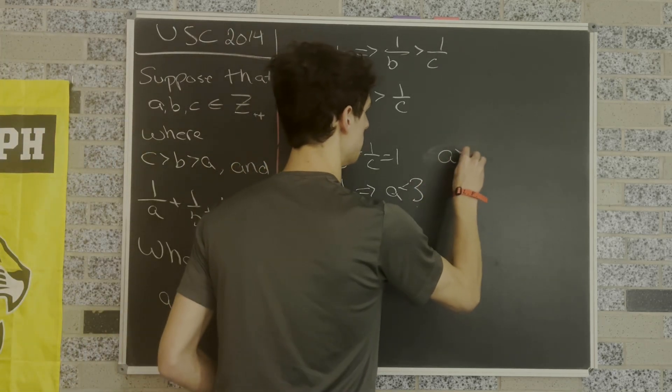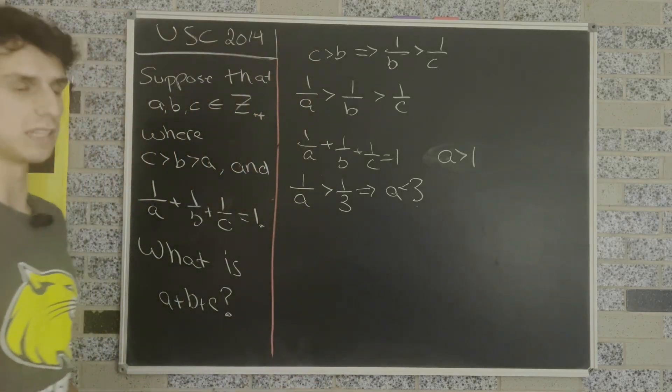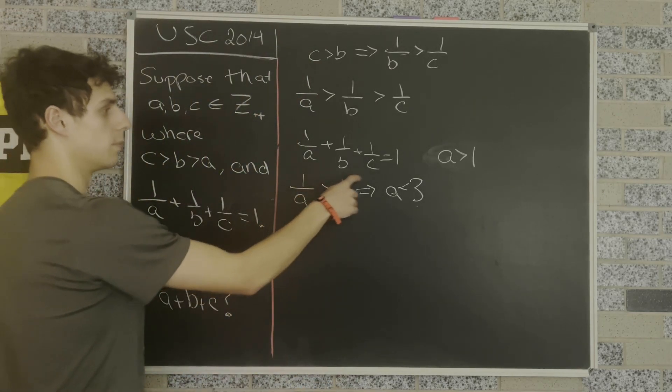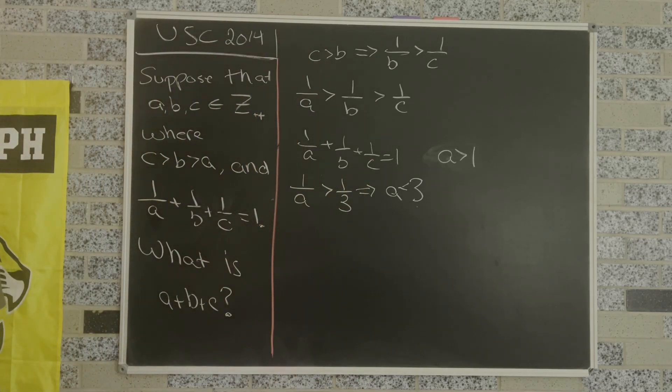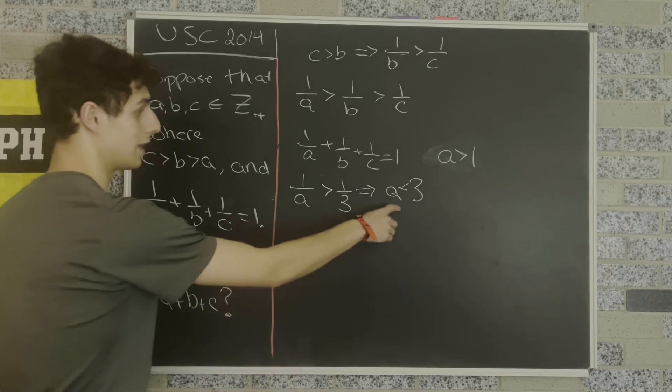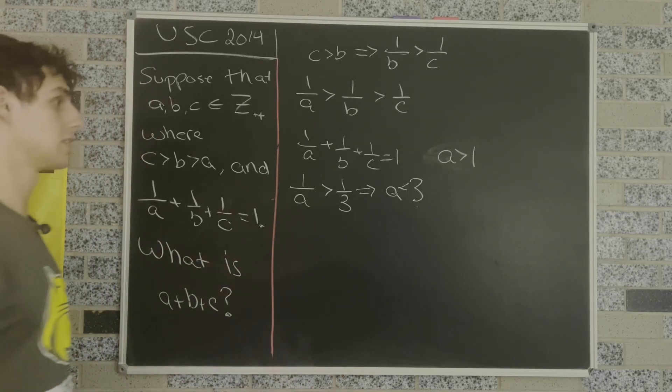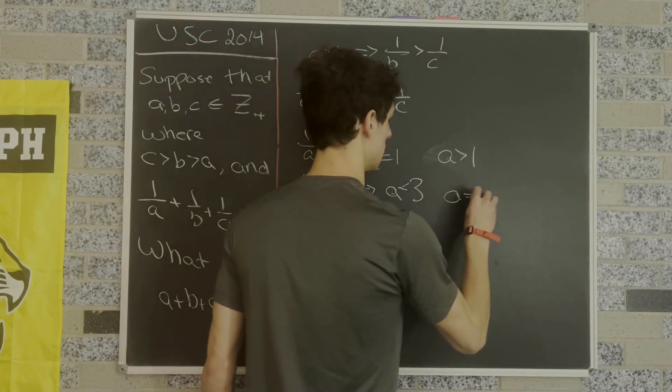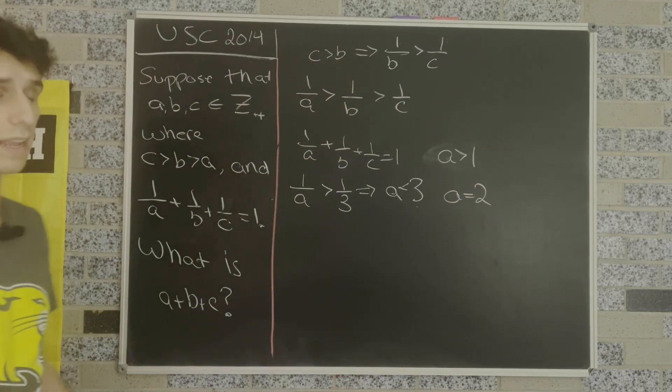Also notice that A must be bigger than 1, because if A was equal to 1, that means 1 over B plus 1 over C would equal 0, but no positive integers satisfy that. So A has to be bigger than 1 but also less than 3, and the only positive integer that satisfies both inequalities is 2. So we know that A equals 2.